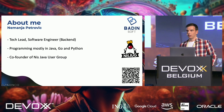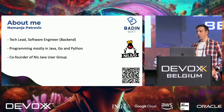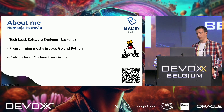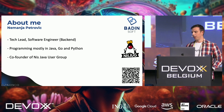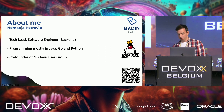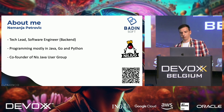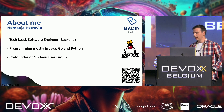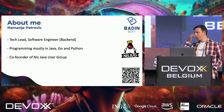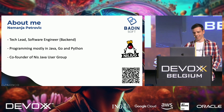A little bit about me. I'm Nemanja. I'm currently working as a tech lead at a company called BuddySoft. I'm mostly focused on backend, but I've started doing some AI stuff during my master's. I'm programming mostly in Java and Go, and for AI stuff I use Python — today's code examples will be shown in Python. I'm also one of the co-founders of our local Java user group in Niš, Serbia. We organize meetups, so if you're ever in Niš, come by and check us out.